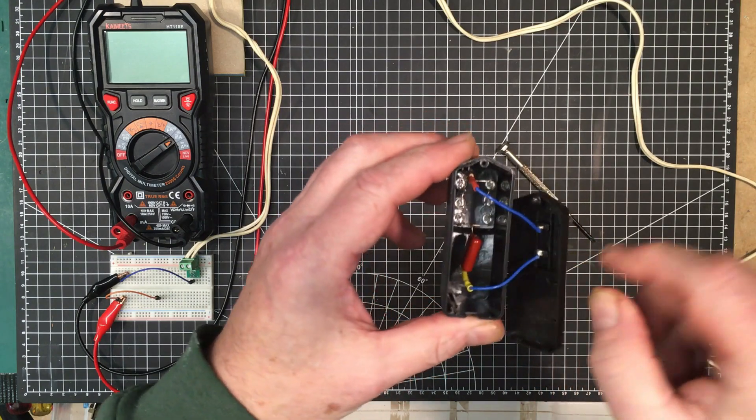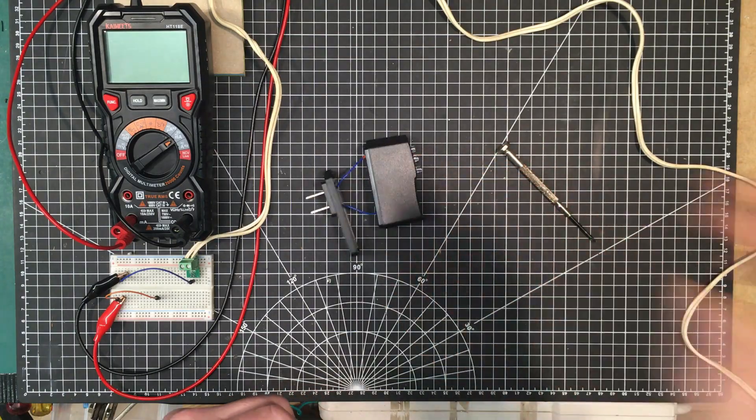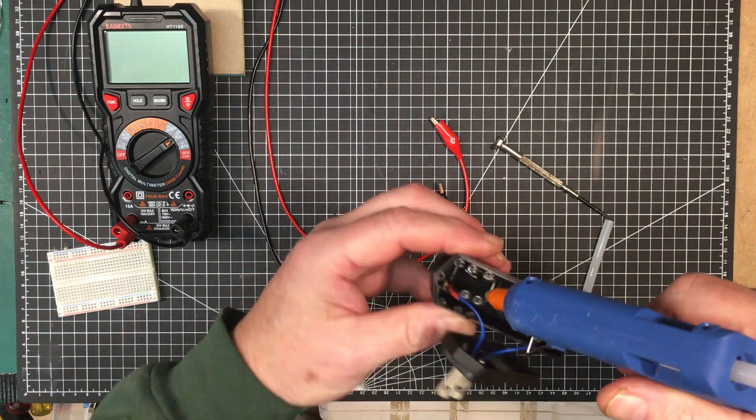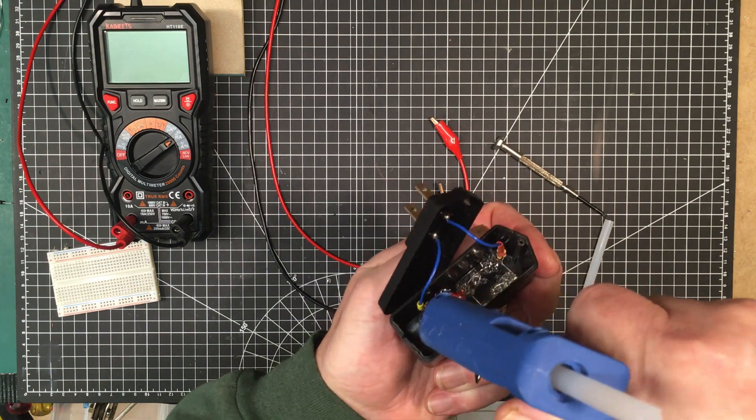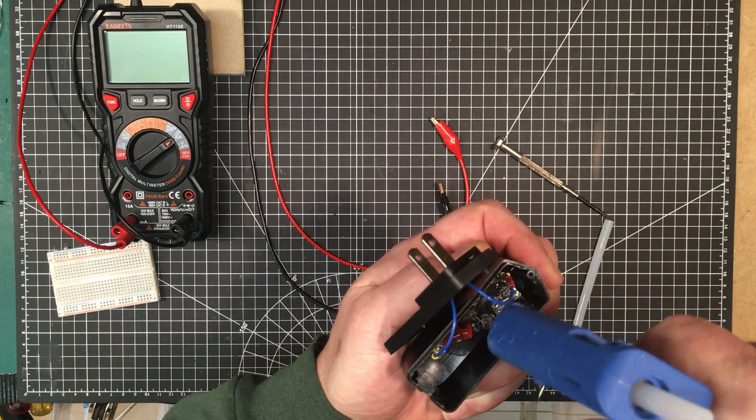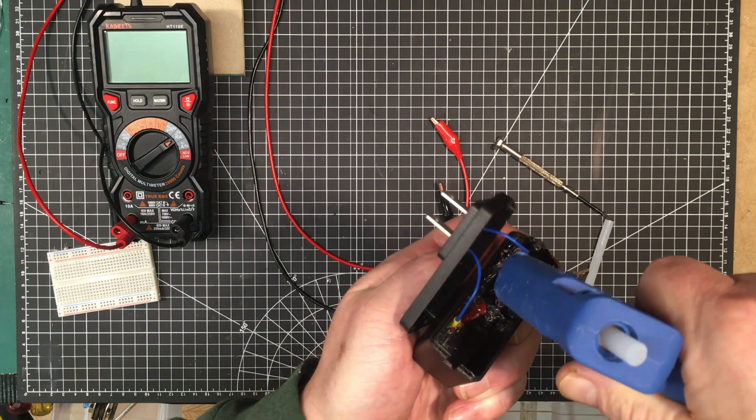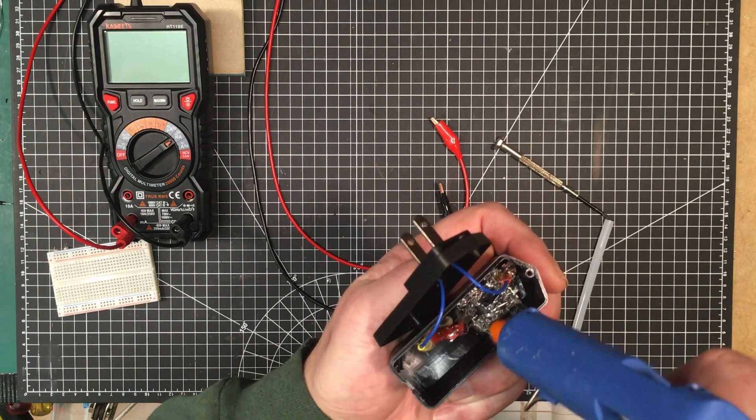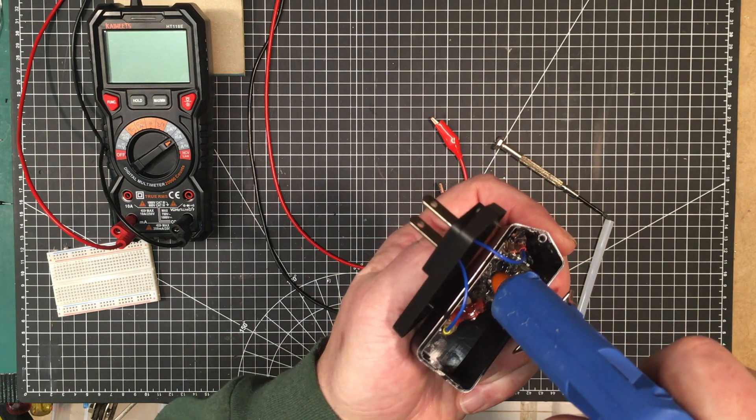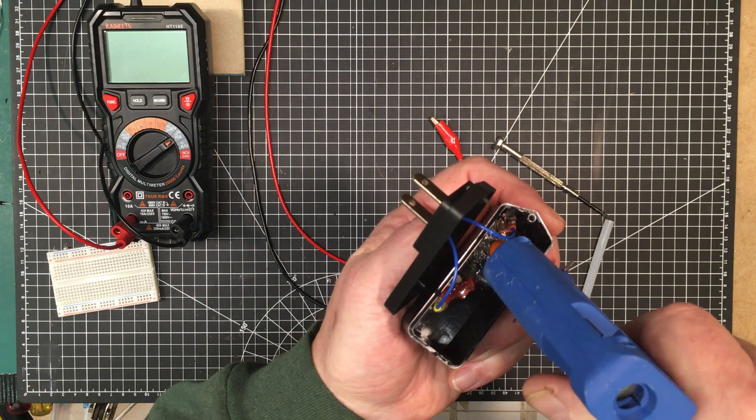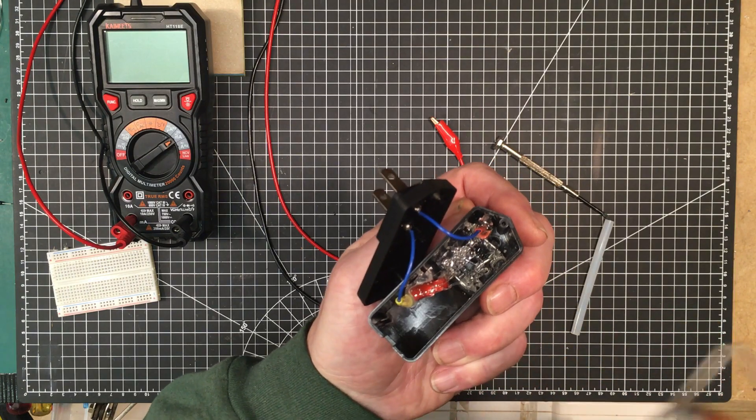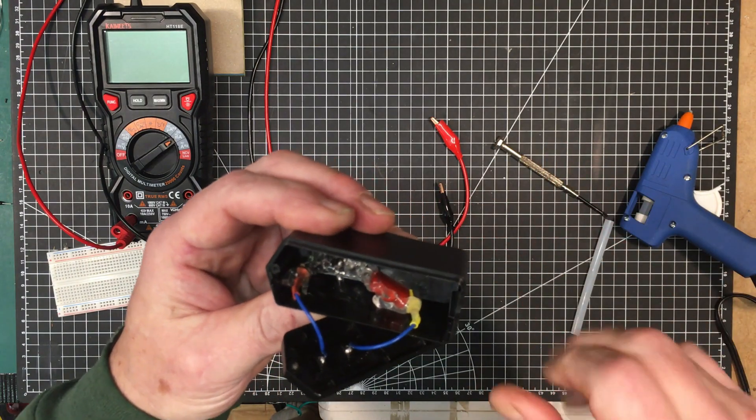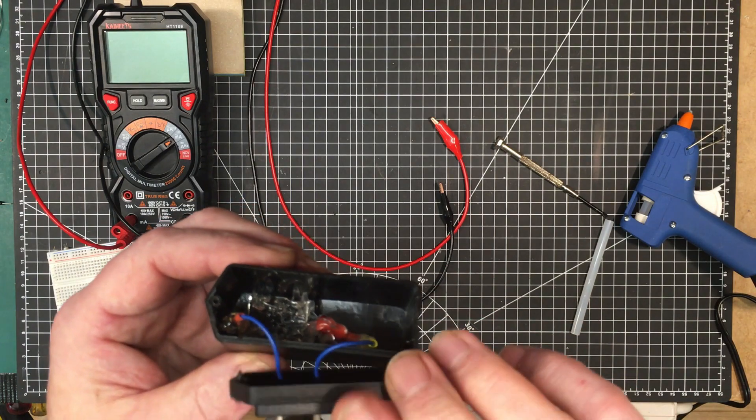Now I just want to make sure we get enough hot glue in there to hold everything in place. Let me get my glue gun out. You can't go too fast with these because it can't heat up the glue stick quickly enough. Okay, I think that's enough. I don't think anything's going to move in there. Make sure that's pushed up against the side there. Yeah, that's good. Well, let's get this screwed back together here.